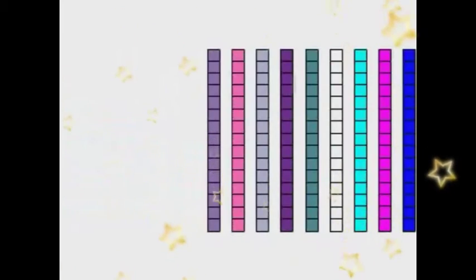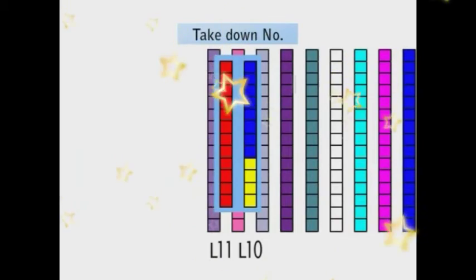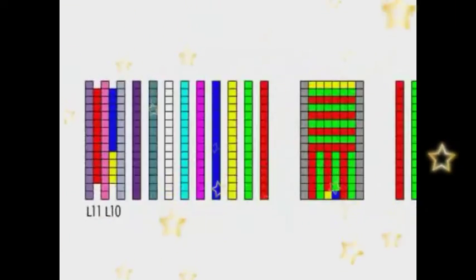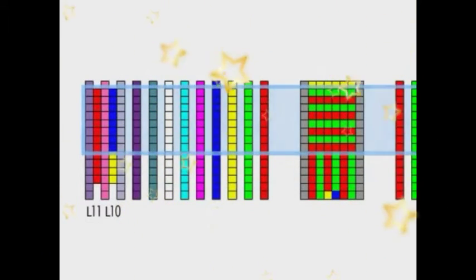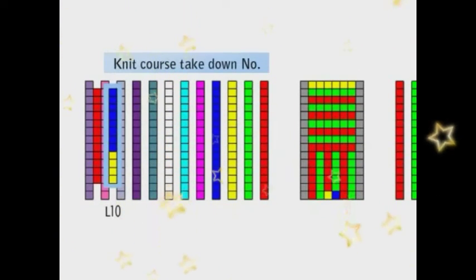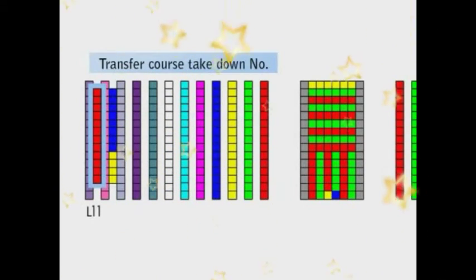Next, option lines L10 and L11. Takedown number. To switch the tension of the takedown according to knitting condition, specify each range with different color. Takedown is to give the appropriate tension to the fabric during knitting. Set the takedown number for knit course on L10 and transfer course on L11.